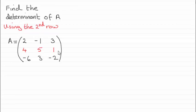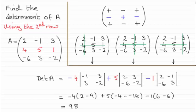Welcome back. The answer is 98, and this is what you should have done. Think about the signs that are associated with the second row: minus, plus, minus. Put those in.